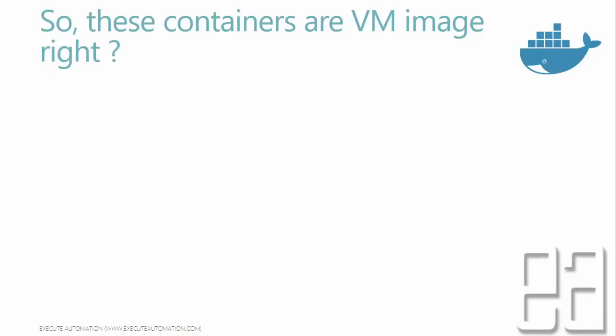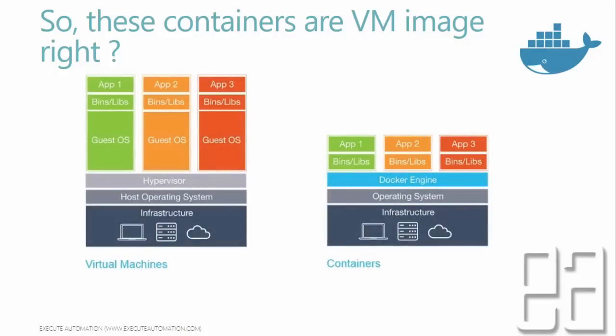Are these containers VM images? Of course not. A virtual machine, as you can see on the left-hand side, has infrastructure — either bare metal machines or a server. On top of the infrastructure, you have a host operating system, which can be Windows, Linux, or OS X. Then on top of the operating system you have a hypervisor — this can be Hyper-V in Windows, VirtualBox, or VMware. Within the hypervisor you have a guest operating system, which can be Windows, Mac, or Linux. Then you have your application bins and libraries, and the application itself. That's how a virtual machine works.